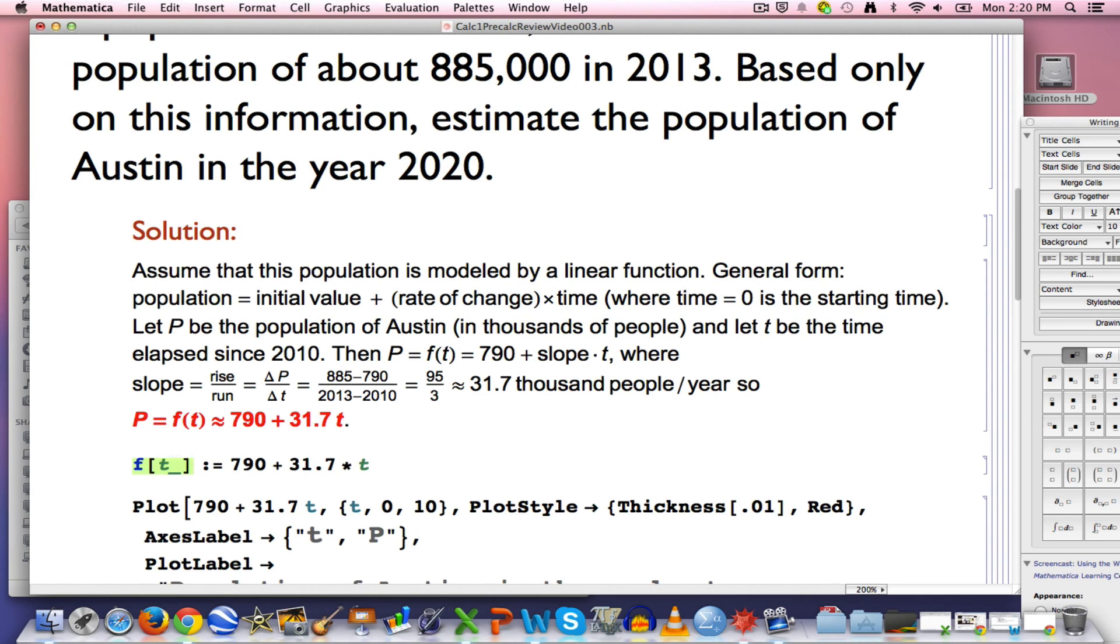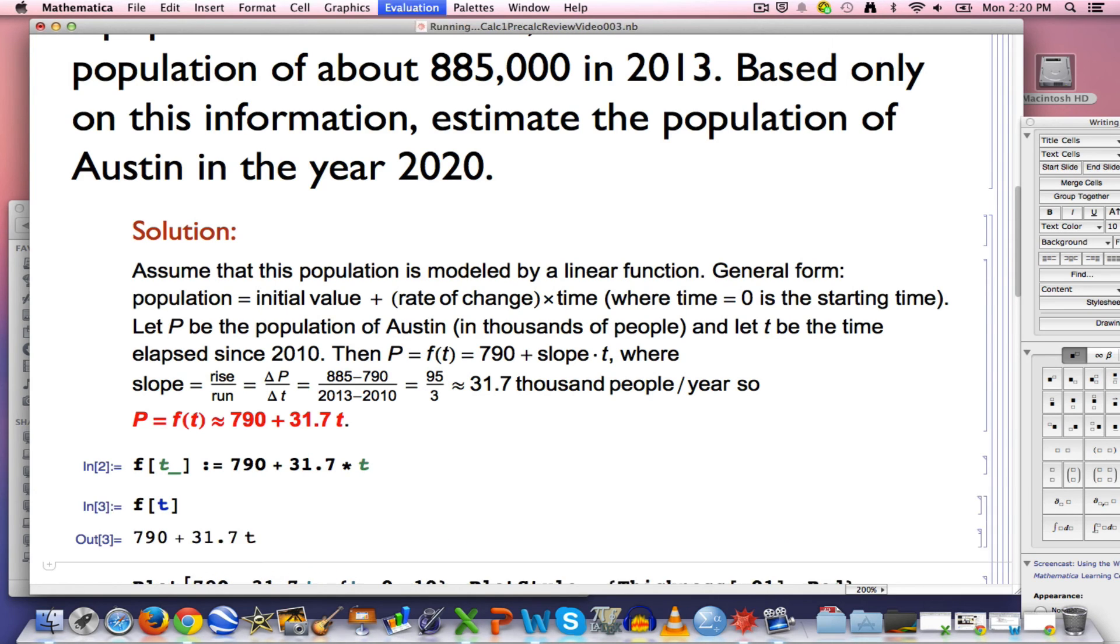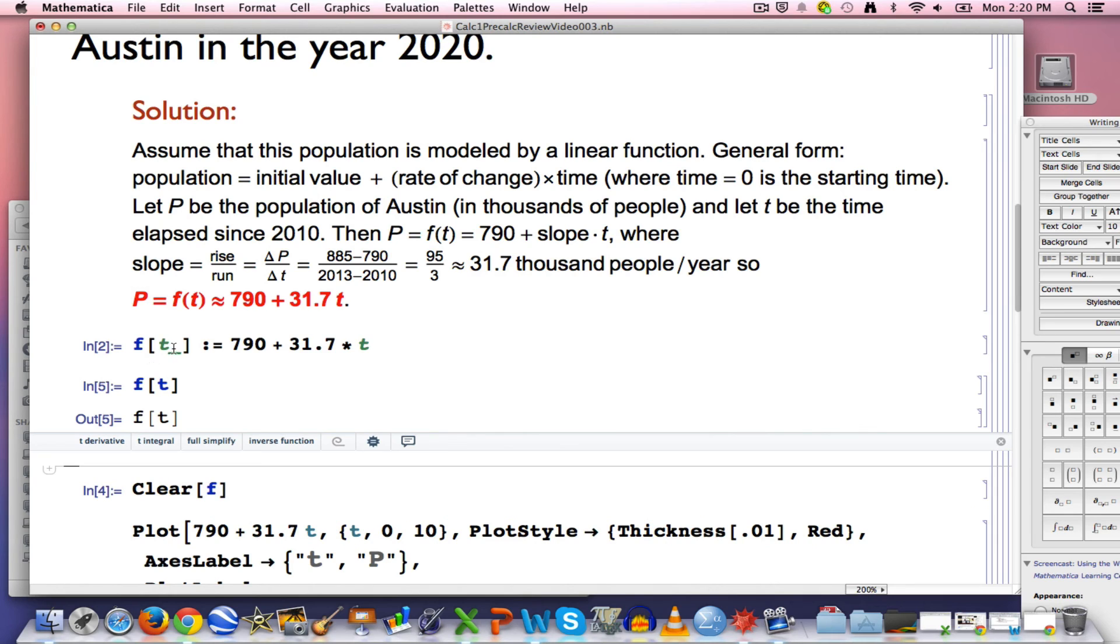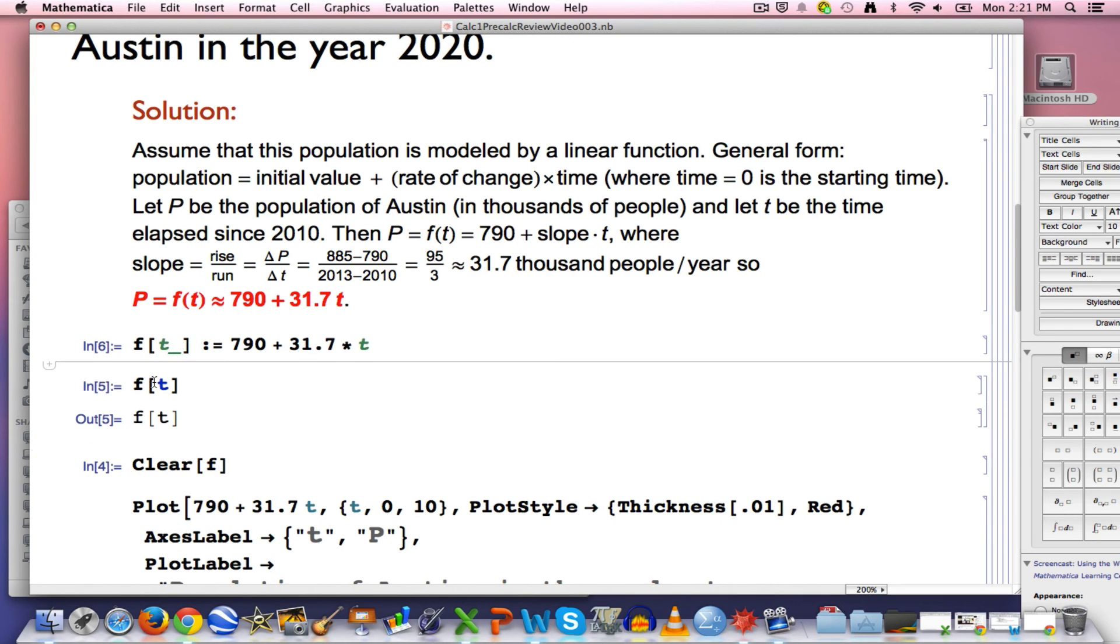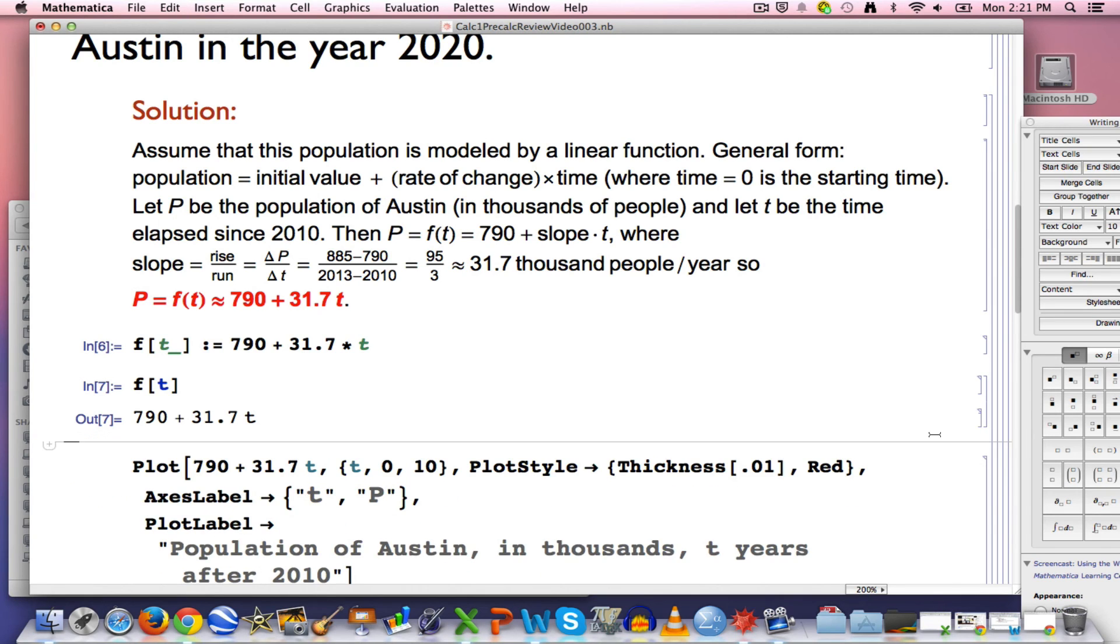Now I can do shift return to enter the function, and if I type f of t without an underscore, and do another shift return, I see the function spit back at me. By the way, you can clear things in Mathematica, the command Clear, and then put an f inside the square brackets there, and enter that, clears out the memory. The function no longer is in memory. If I hit this f of t here, it just spits back f of t at me. I'll re-enter the function, and re-enter this line to see that it now is stored in its memory.